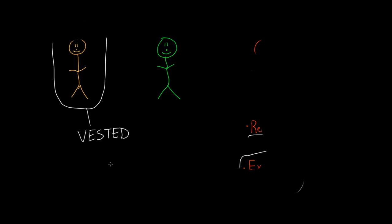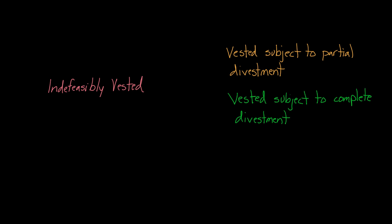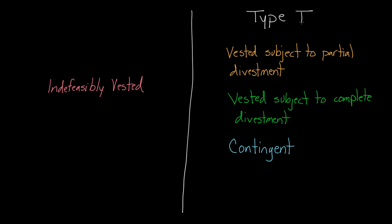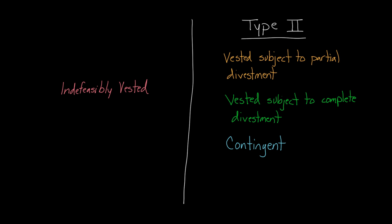The challenge is really with the remainders, of which there are four categories: indefeasibly vested remainders on one side, and on the other side, vested remainders subject to partial divestment, vested remainders subject to complete divestment, and contingent remainders. For simplicity, I'm going to call these last three remainder types 'type two remainders,' but don't ever say that on an exam — it's just for simplicity.